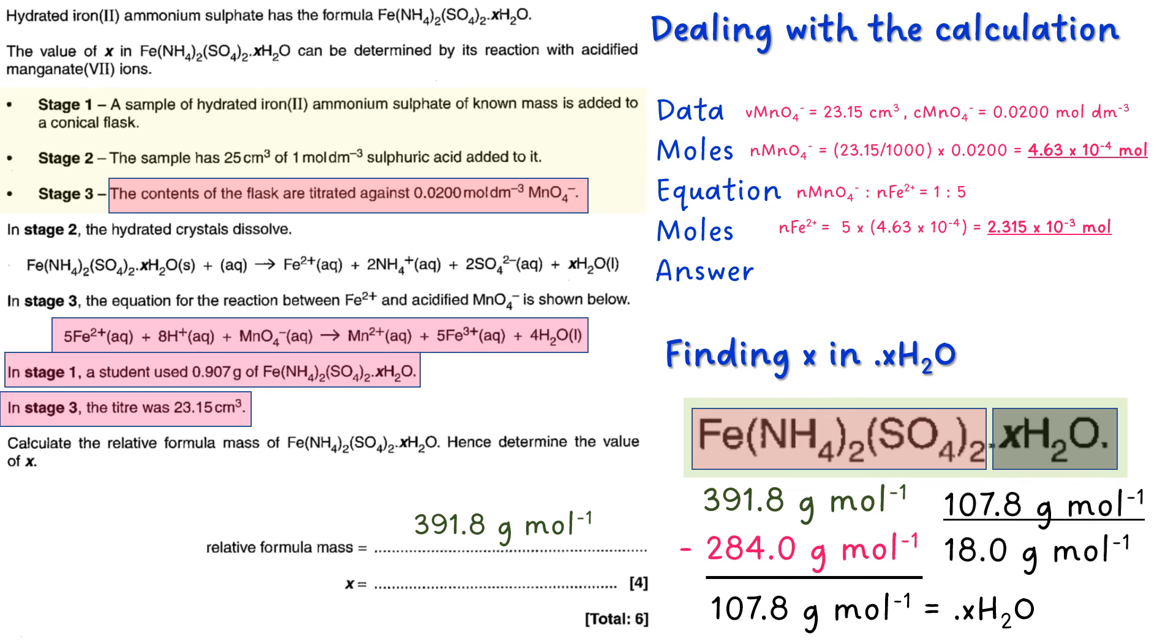So you divide that by 18, and that gives you 5.99. A nice round number, but obviously very, very close to 6. So that means your value of x is 6.